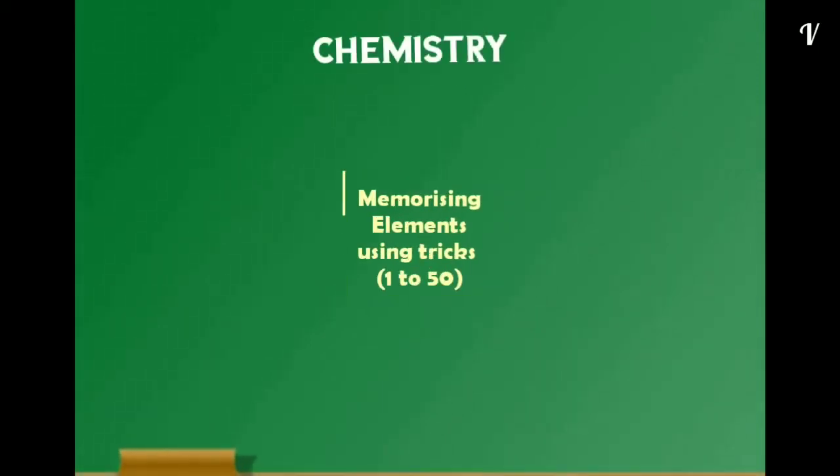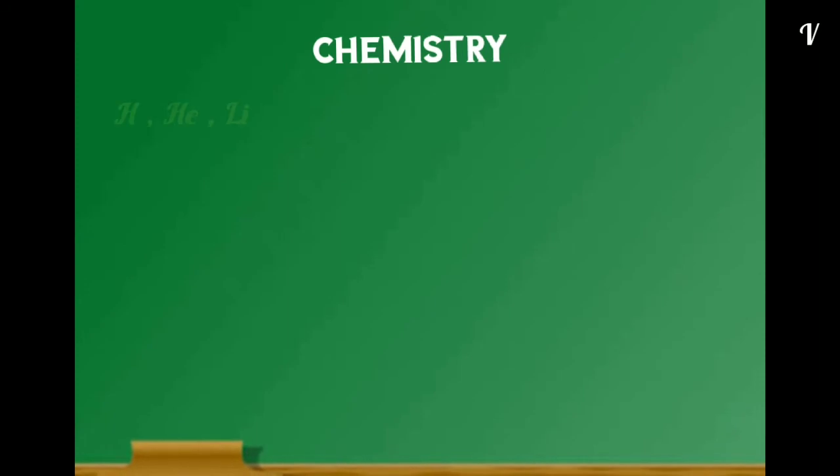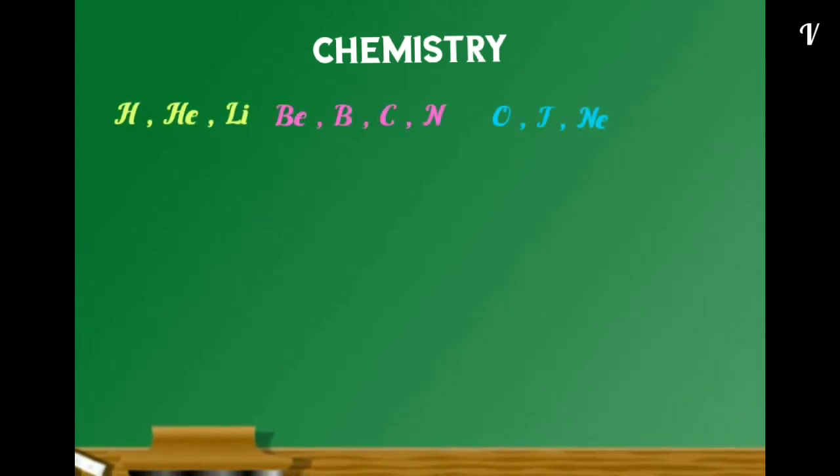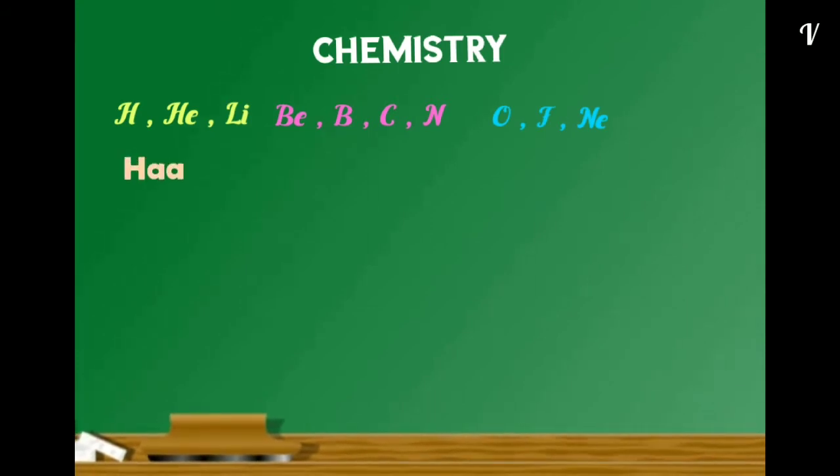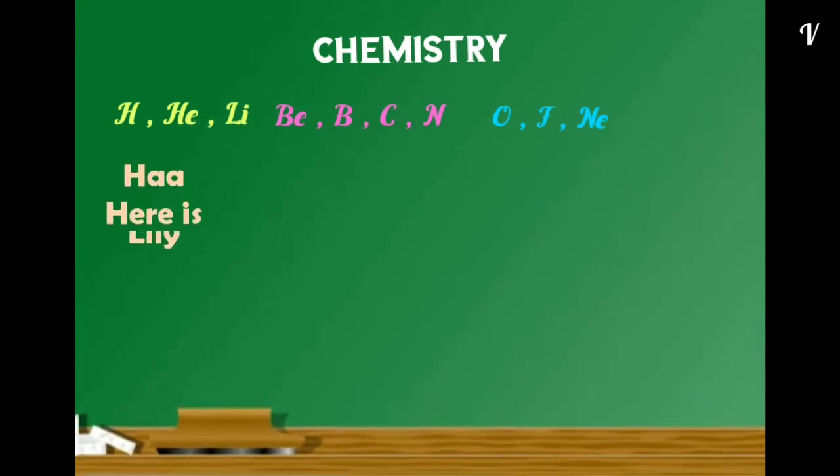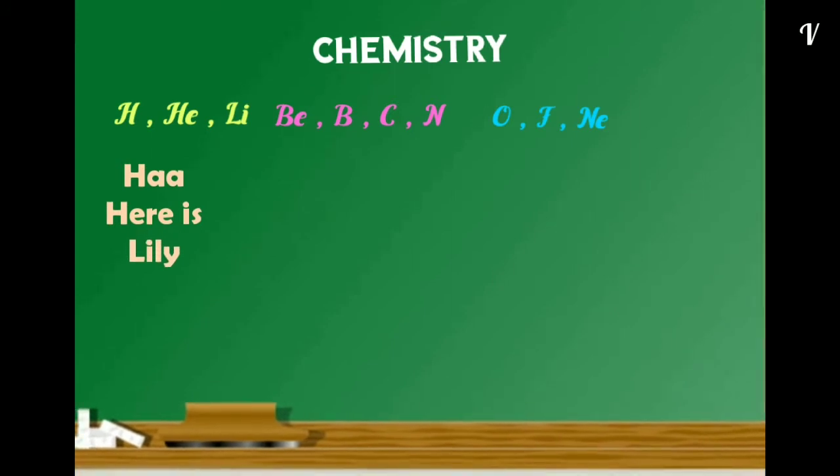Memorizing Elements from 1 to 50 Using Tricks. Hydrogen, Helium, Lithium, Beryllium, Boron, Carbon, Nitrogen, Oxygen, Fluorine, Neon. Huh, here is Lily - H for Hydrogen.